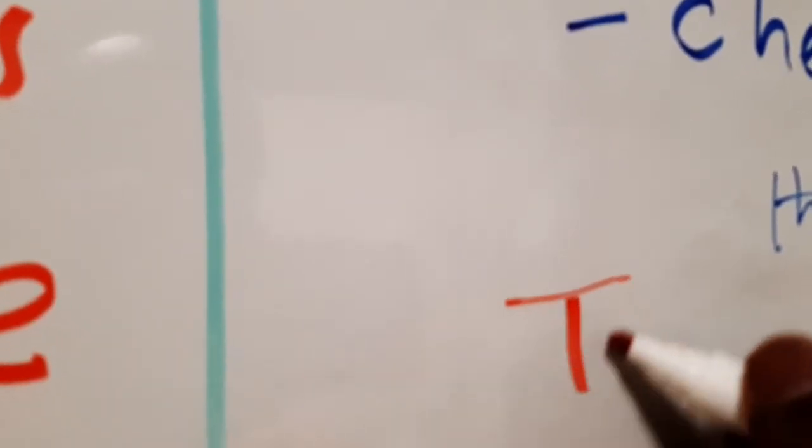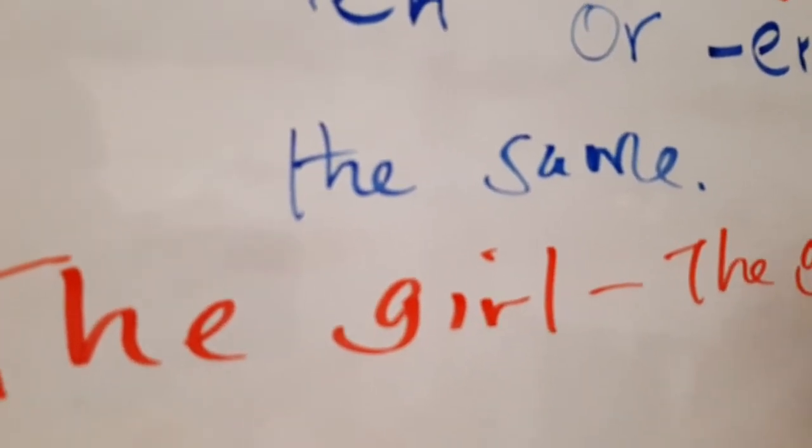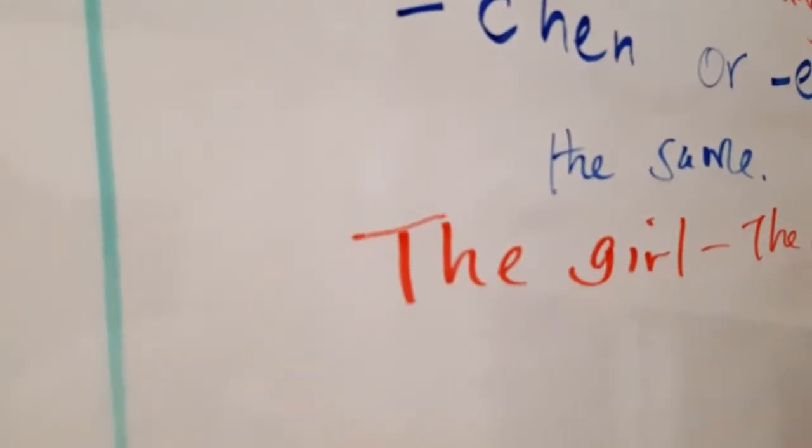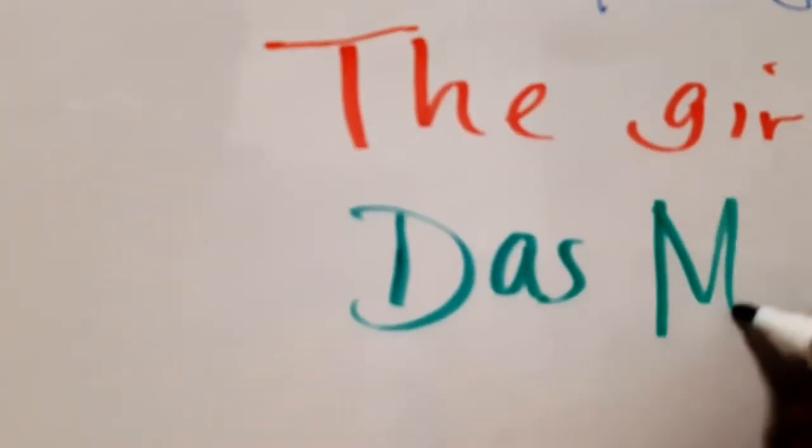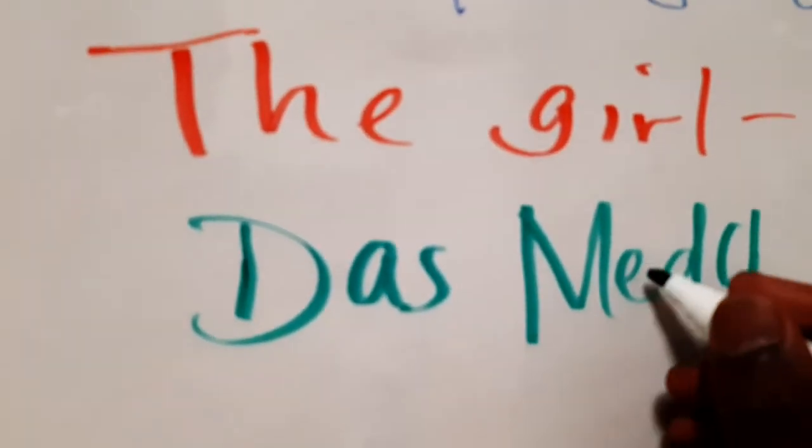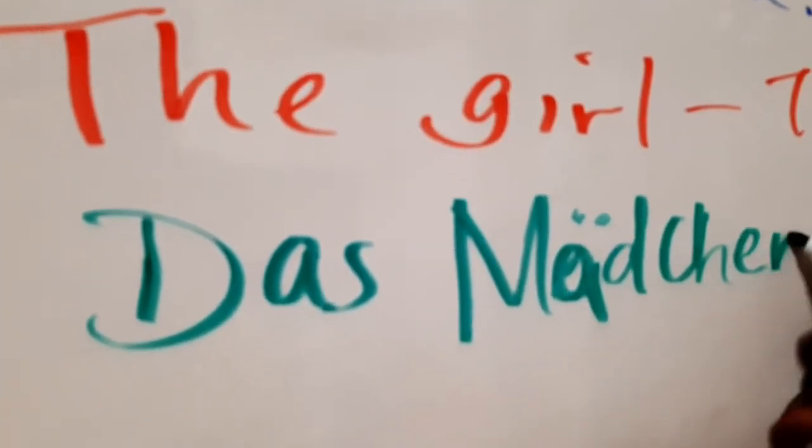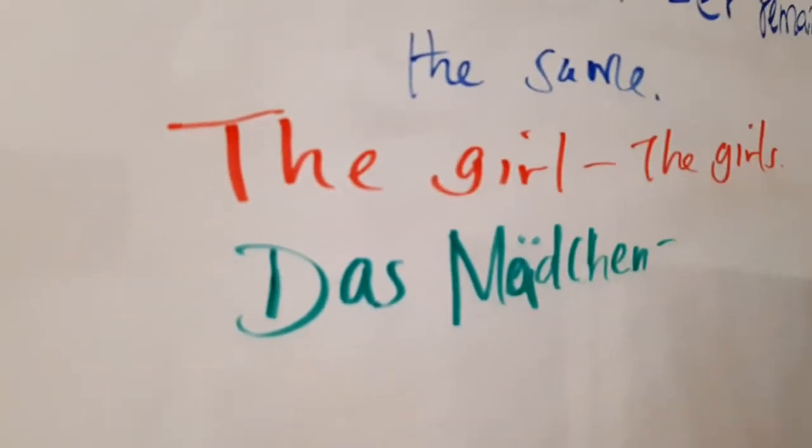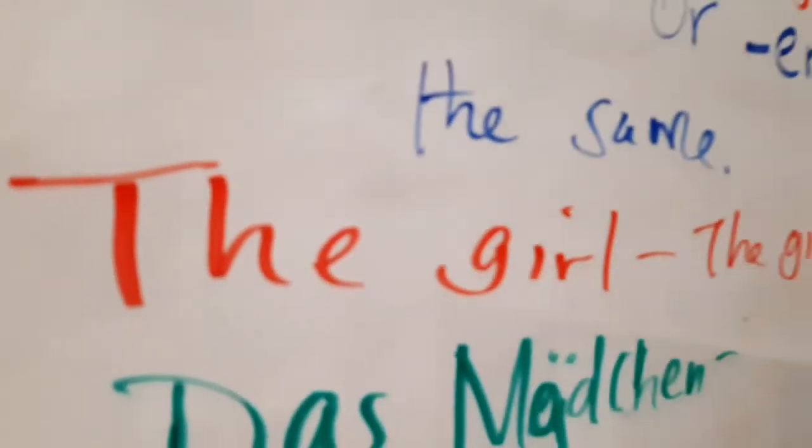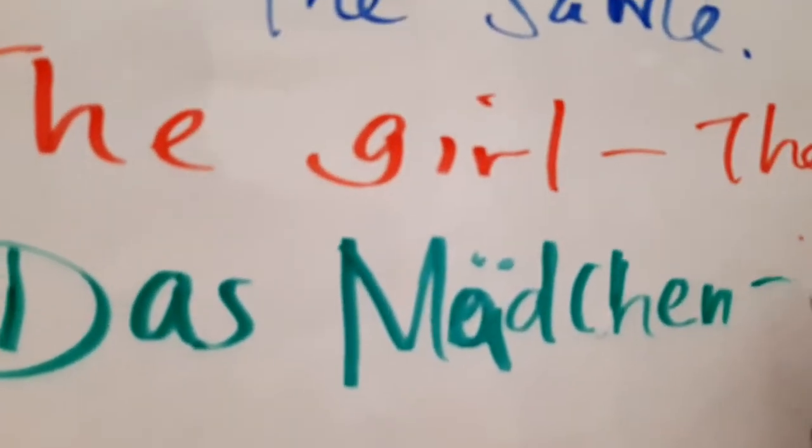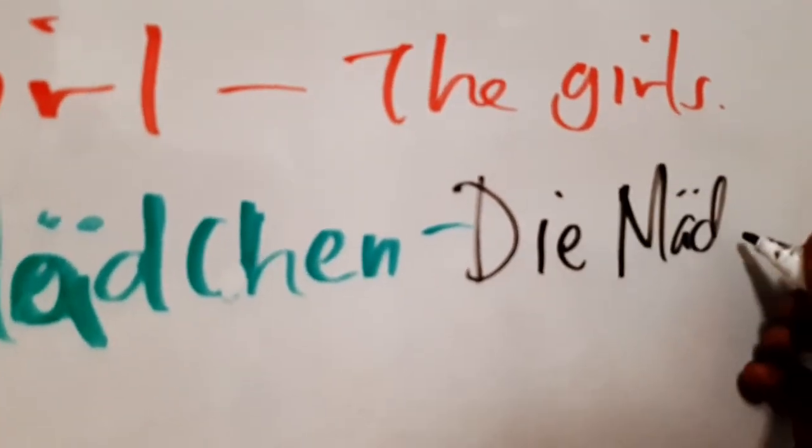For example, let's say the girl, the girls. So this one will be in singular it's das Mädchen, this with umlaut, Mädchen, and in plural it will be die Mädchen, so it will not change.